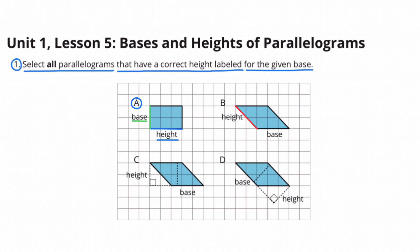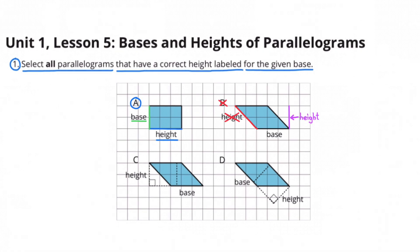Figure B: They've labeled the height and the base, but you'll notice that the height is not at a 90 degree angle compared to the base. If the height were located here in purple, it would be at a 90 degree angle.